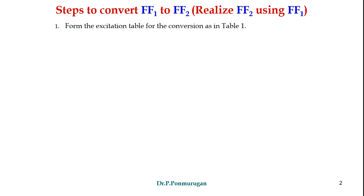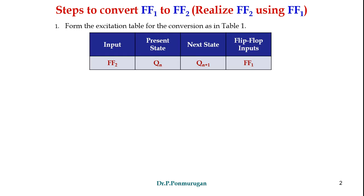The first step is to form the excitation table for the conversion, as in table 1. Here the input is flip-flop 2's input and the present state. Next, we have to fill the next state, and using these three we have to fill the flip-flop inputs of flip-flop 1.